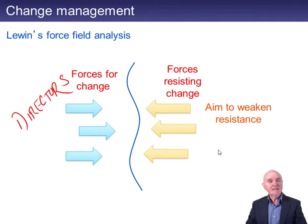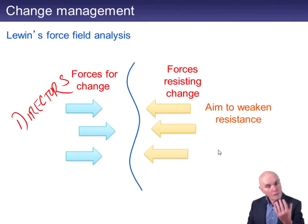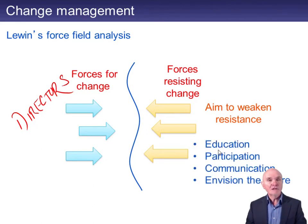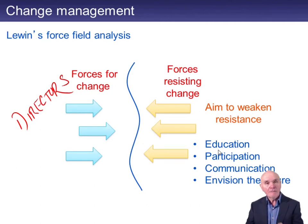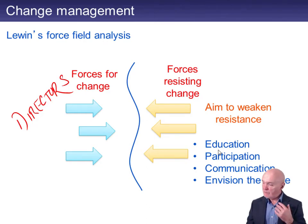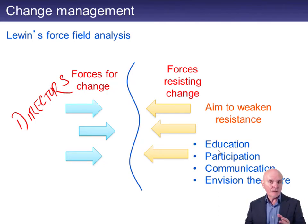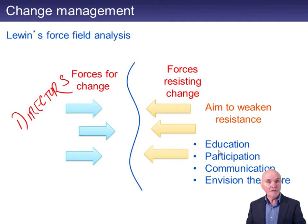What Lewin says is that instead of this head-to-head confrontation, you should work on weakening the resistance to change. The first way is to educate people — explain to people why the change is needed. If you explain that you're losing customers, cash flow is going negative, and if nothing changes factories may close or people be made redundant, that is obviously going to weaken resistance to change rather than an unexplained change coming out of the blue.